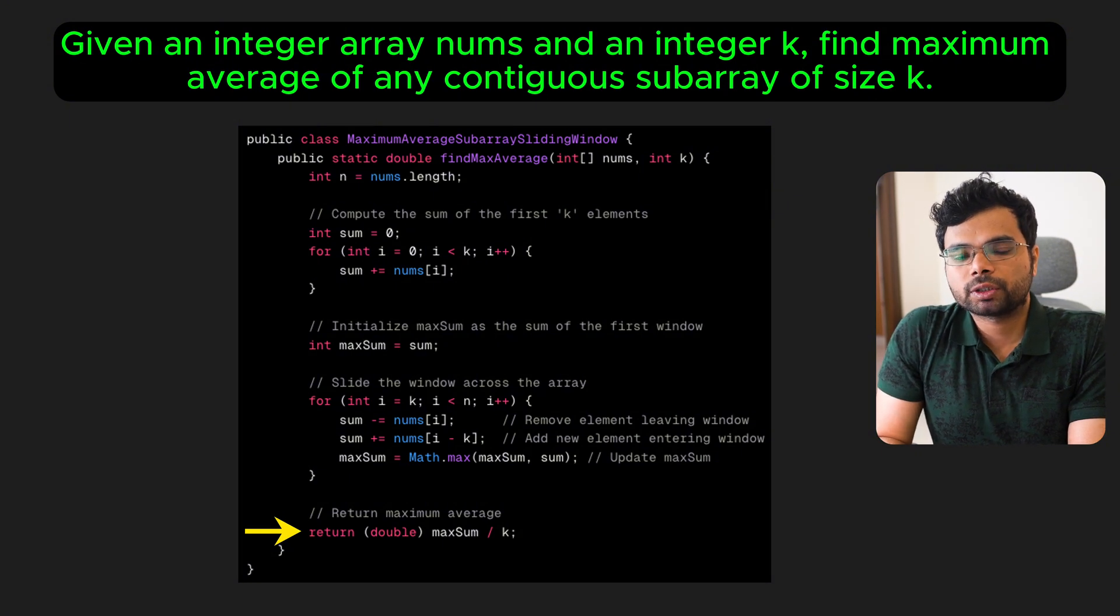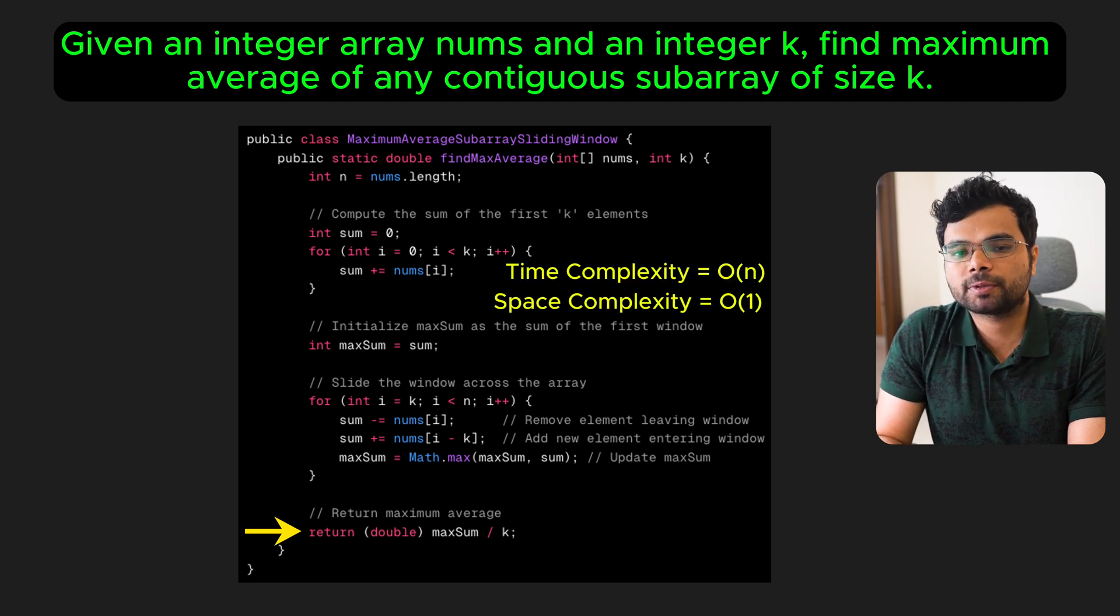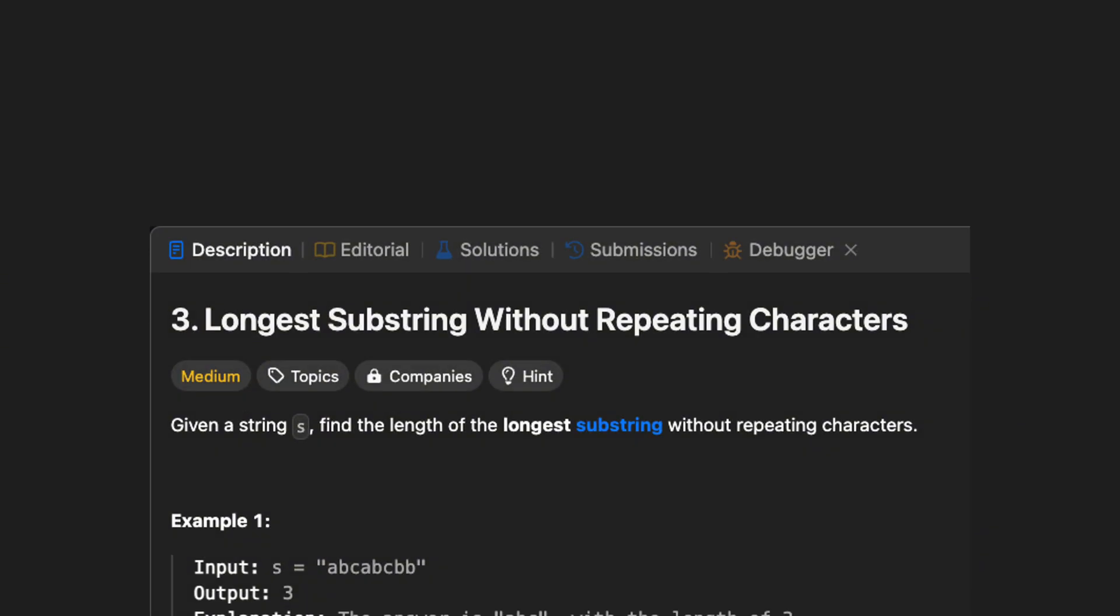Using this fixed sliding window approach, we iterate over each element only once, which reduces the overall time complexity to order of n. The space complexity is order of 1 since we are not using any additional space. Let's move to the next problem.